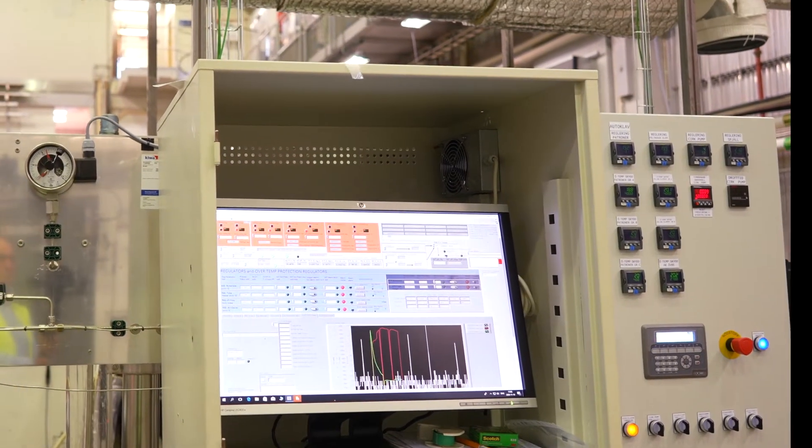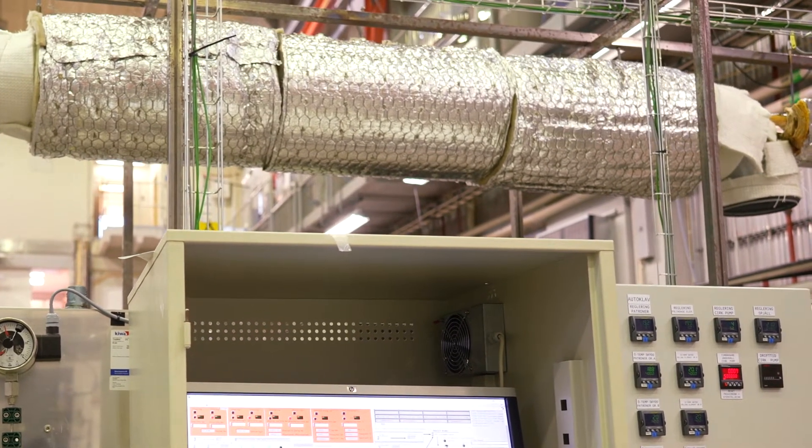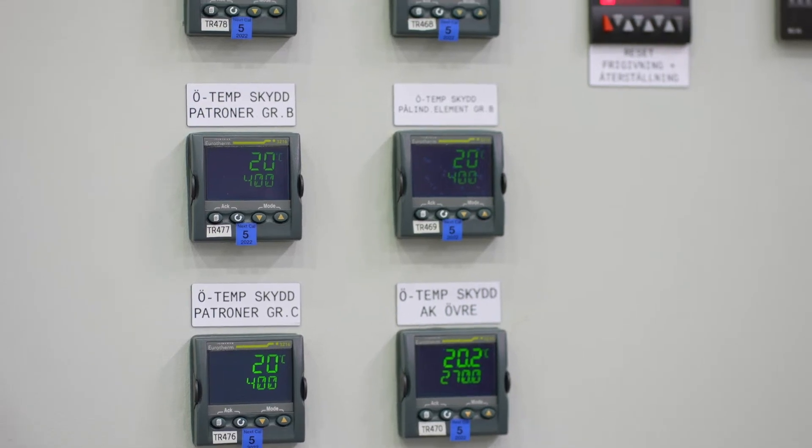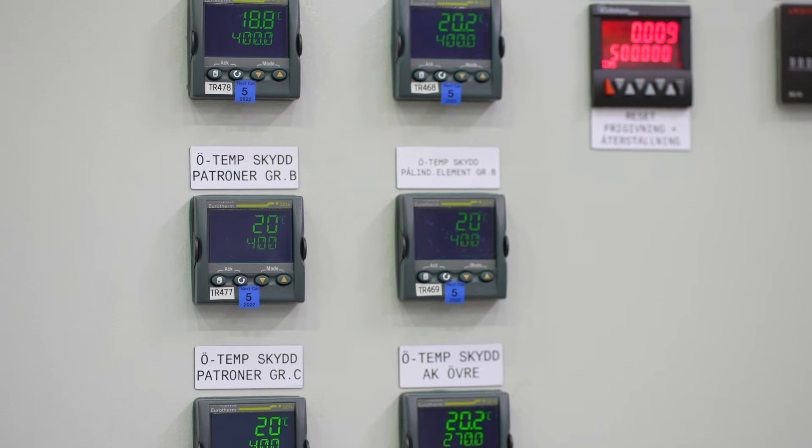There are two high velocity test loops specially designed to simulate the real flow conditions of nuclear reactors. Flow accelerated corrosion and other mechanisms that require a high flow velocity could be studied here.